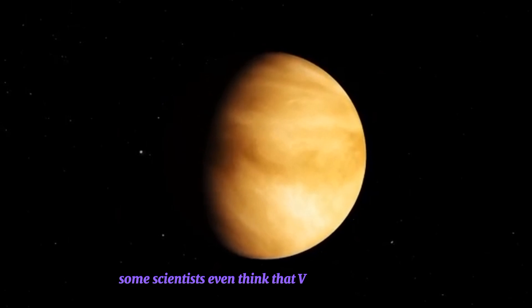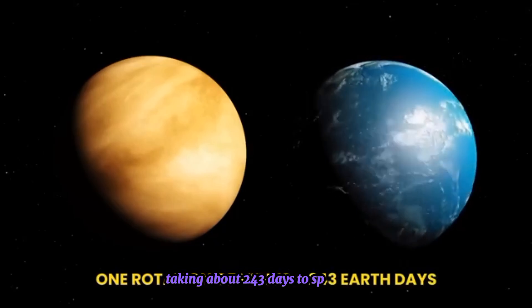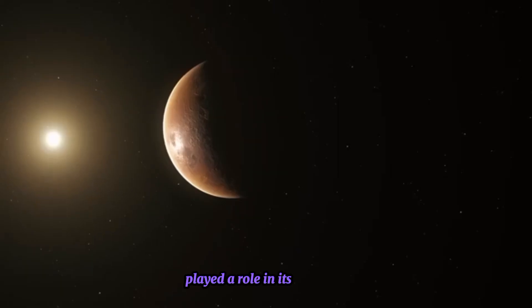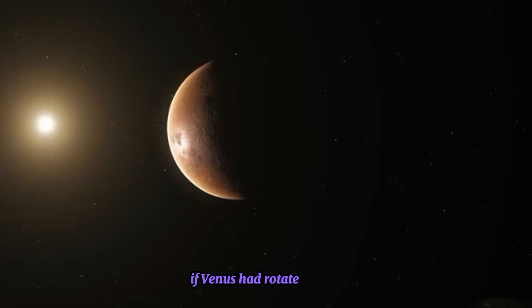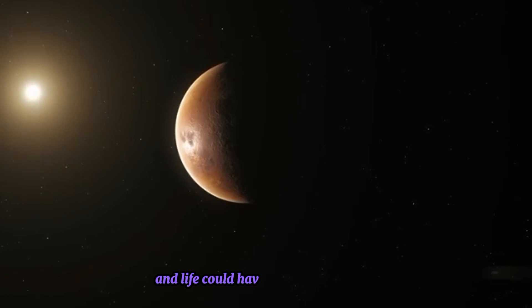Some scientists even think that Venus' slow rotation, taking about 243 Earth days to spin once, played a role in its downfall. If Venus had rotated faster, the climate might have stayed more stable, and life could have possibly developed.